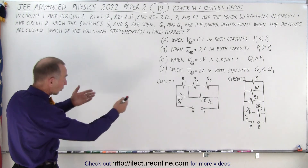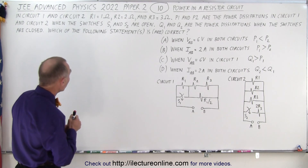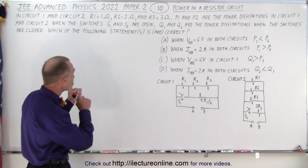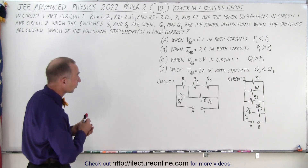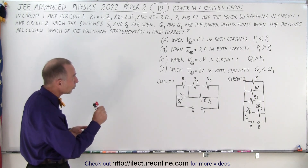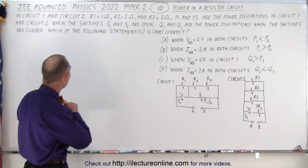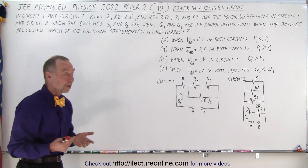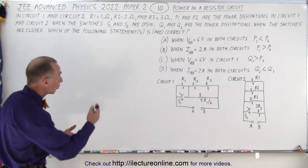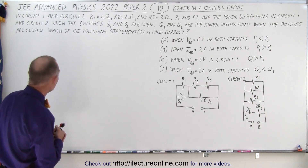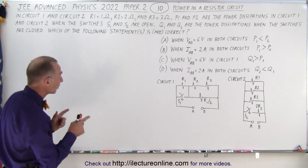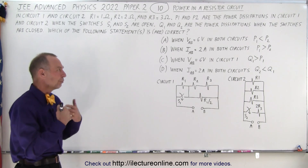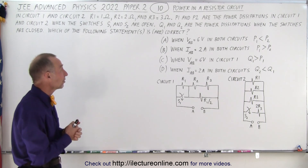So in circuit 1 and circuit 2, there are two circuits. R1 is 1 ohm, R2 is 2 ohms, and R3 is 3 ohms — the number of the resistor equals the resistance of each resistor, which is nice. Now P1 and P2 are the power dissipations in circuit 1 and 2 when the switches are open. When the switches are closed, Q1 and Q2 are the power dissipations. Which of the following statements is or are correct? There are four statements, and anywhere from 1 to 4 can be correct.